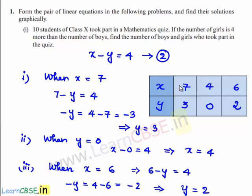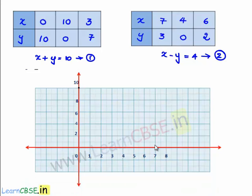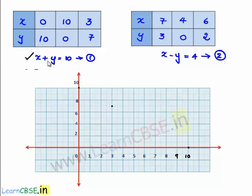By using these tabular values we will plot a graph and find the values of x and y. For the first equation x plus y equals 10, the coordinates are (0, 10), (10, 0), and (3, 7). Let us plot these points on the graph. The point (0, 10) is here, (10, 0) is this point, and (3, 7) is here. We join these three points to get the straight line x plus y equals 10. The black points correspond to this line.